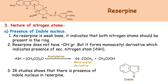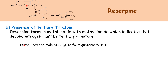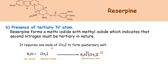IR study shows that there is presence of indole nucleus in reserpine. Then next, presence of tertiary nitrogen atom: reserpine forms a quaternary salt with methyl iodide, which indicates that the second nitrogen atom must be tertiary in nature. This is proved by the fact that it requires one mole of methyl iodide to form a quaternary salt. That is, the other nitrogen atom in reserpine is tertiary in nature.